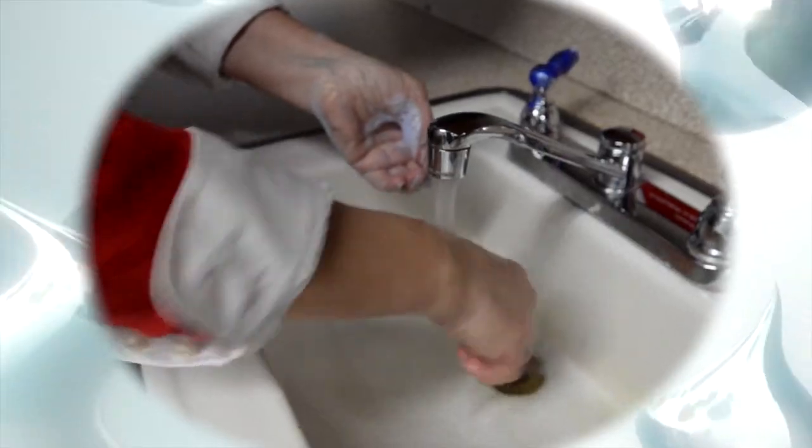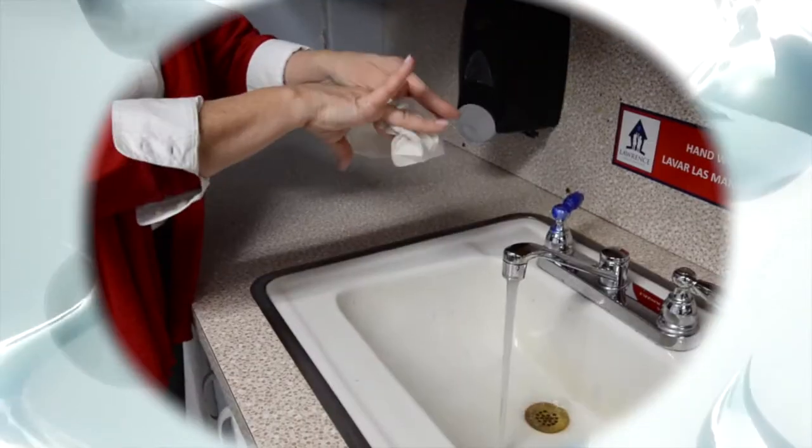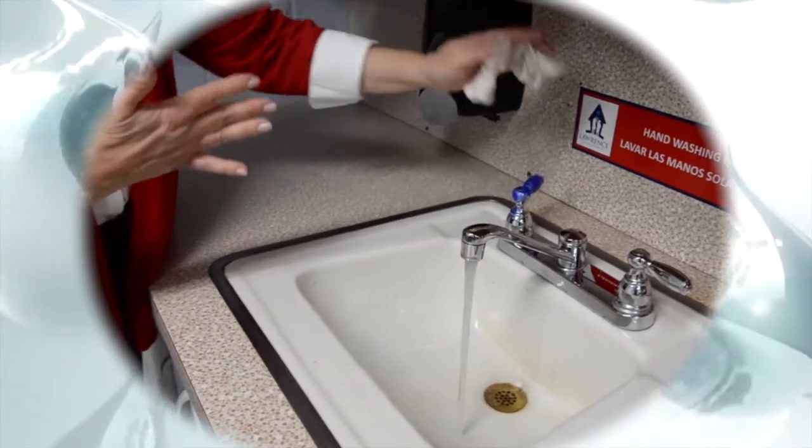When we then get a paper towel to dry our hands, we still have not turned the water off. We're going to use a paper towel to turn the faucet off to keep our clean hands clean.